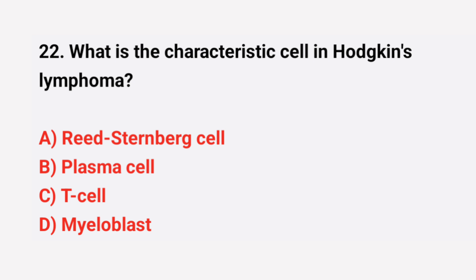Question number 22: What is the characteristic cell in Hodgkin's lymphoma? The right answer is option A: Reed-Sternberg cell.